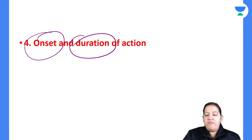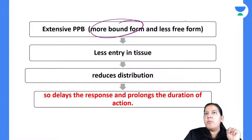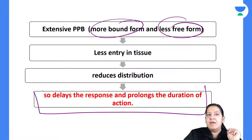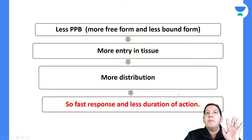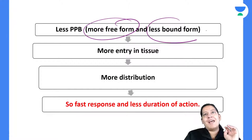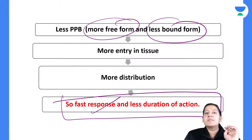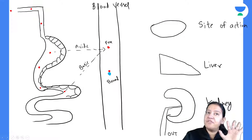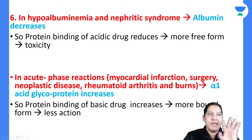Summary: drugs having more bound form and less free form will have late onset but prolonged duration of action. Drugs having more free form and less bound form will have fast response but less duration of action. Please understand this rather than just memorizing it.